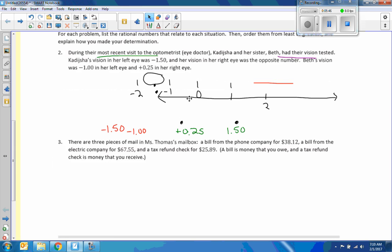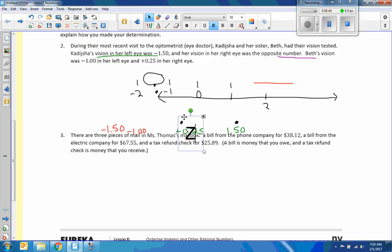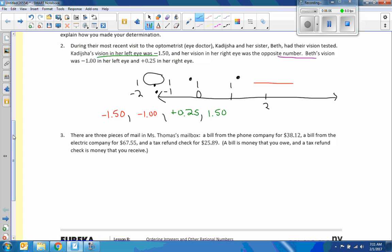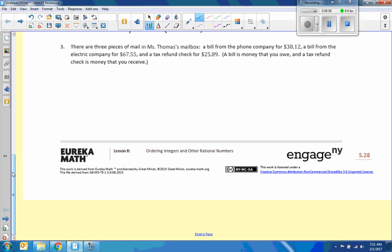Now I have listed them from least to greatest. Negative 1.5, negative 1, positive 0.25, and 1.5. So now I could move my number line out of the way. So now I have 1.5, negative 1, positive 0.25, and 1.5. And we always put commas in between when we're listing.